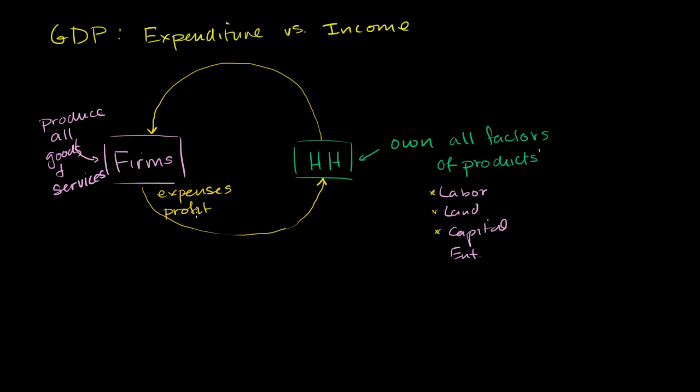Whatever's left over after expenses is profit. But we're assuming all the firms are also owned by all the households, so the expenses plus the profit end up all going to the households and becoming income, which then becomes expenditures for the household, which then become revenue for the firms.